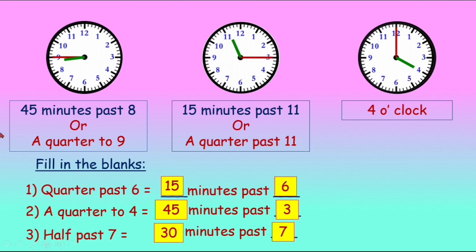Please have it clear: a quarter to 4 means to reach 4 o'clock the minute hand has to move 15 minutes more. So that means it is currently 45 minutes past 3.